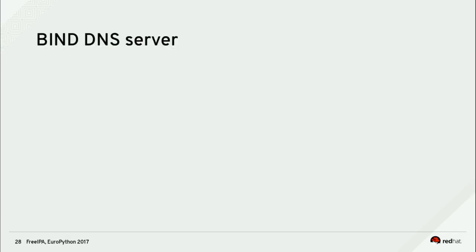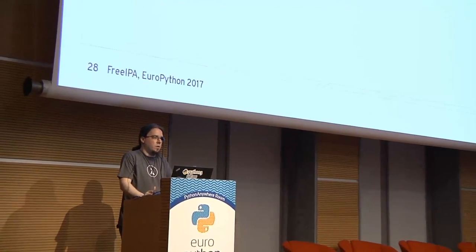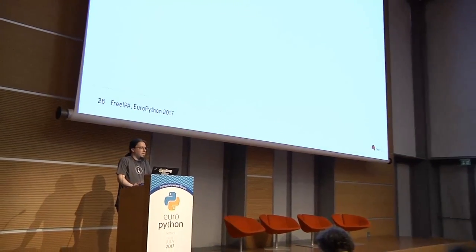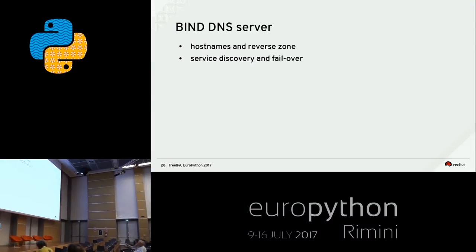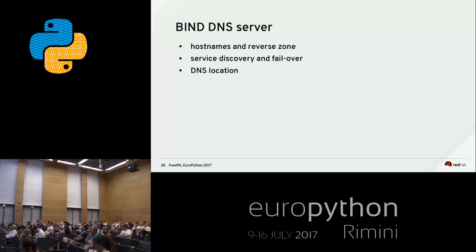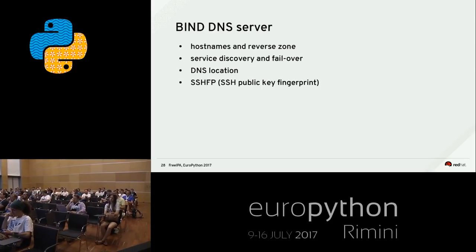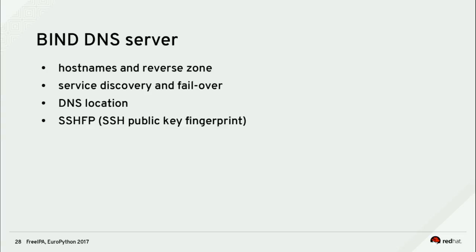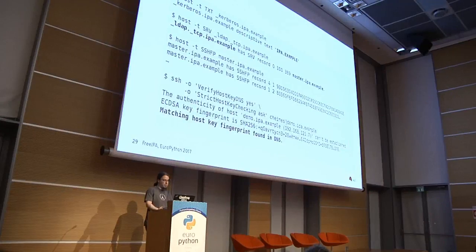FreeIPA also includes a DNS server — because hostnames are identities too. We store host names and reverse zones in DNS for service discovery and failover: LDAP servers are discovered via DNS, even location-based, and if a server fails we automatically try another. Location support keeps you in your own data center unless local servers fail. We store SSH fingerprints in DNS and also support DNSSEC.